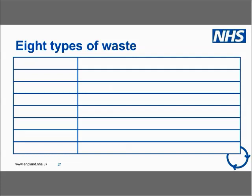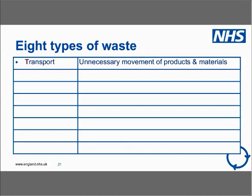We're going to talk through the eight types of waste in a double act, giving a generic example for each and asking you to share your own examples in the chat box. The first waste is Transport — unnecessary movement of products or materials. This includes things like emails: we send loads of unnecessary emails travelling all over the place. There are also good examples coming through the chat.